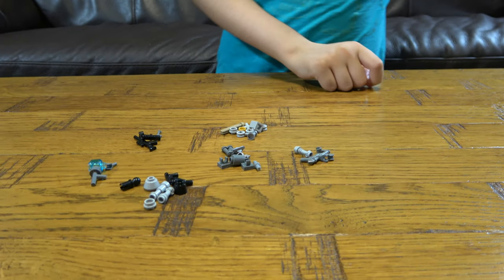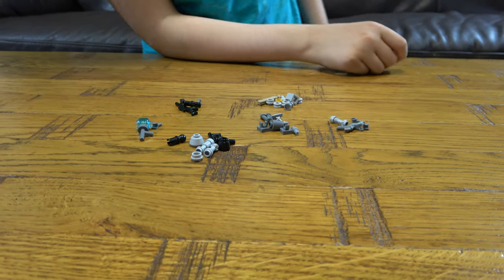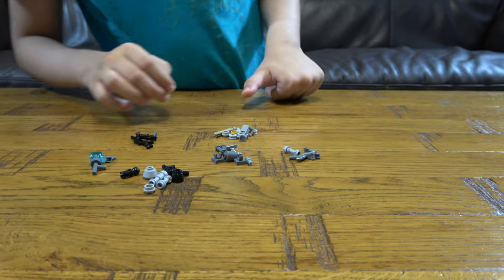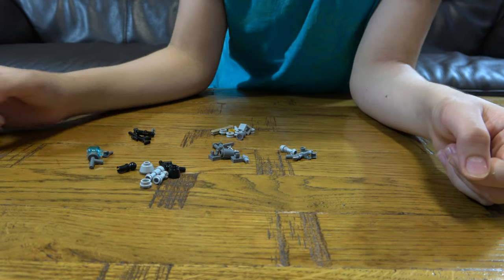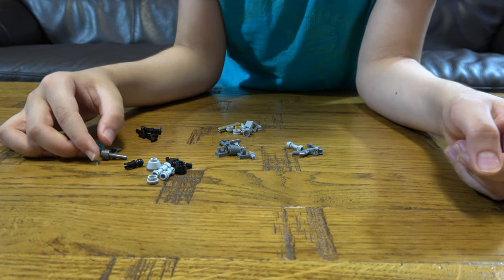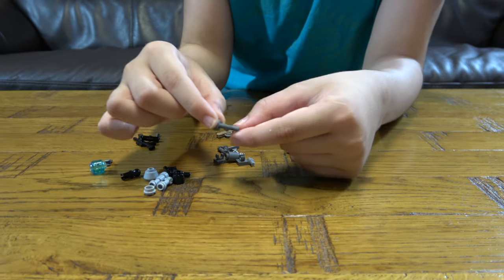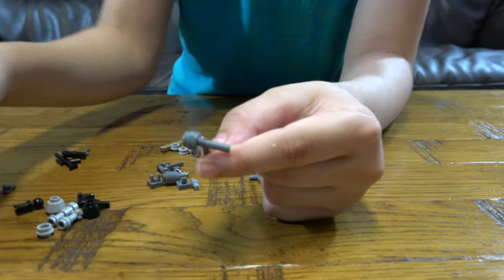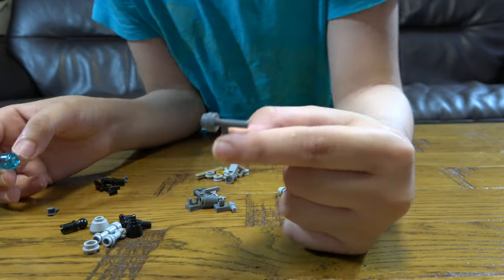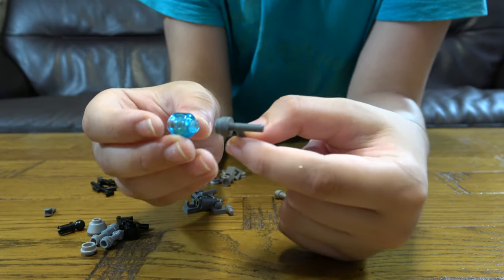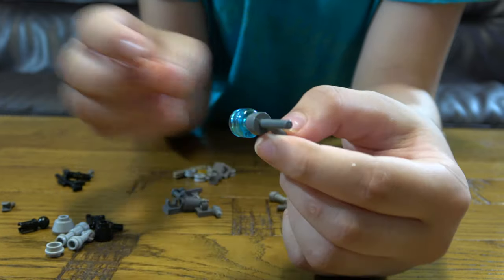The first gun we're going to make is a gun that is the least pieces needed to make it, which is this one. First you get one of these. It's only 3 pieces. You get one of these, then you get one of that.